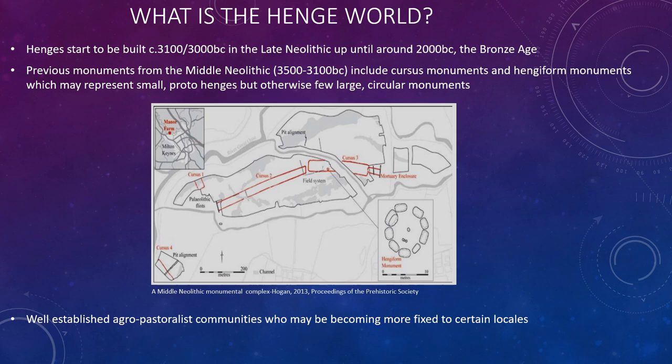Prior to the late Neolithic period, during the middle Neolithic period, you have the Hengeiform monuments. The example on the screen is made up of consecutive pits which create a circular design. The one here is about 10 meters in diameter and that's fairly typical of Hengeiform monuments. This might be the concept design for the later Neolithic Henge monuments — they just take this design and blow it up times by 10. It's quite incredible what these agro-pastoralist communities can do with just a digging stick and an antler pick.